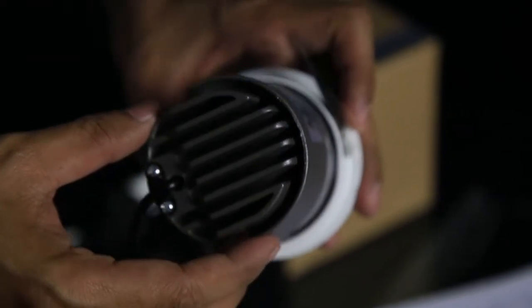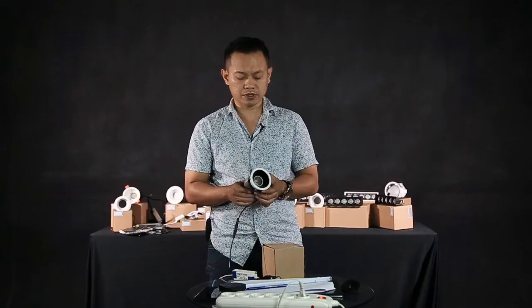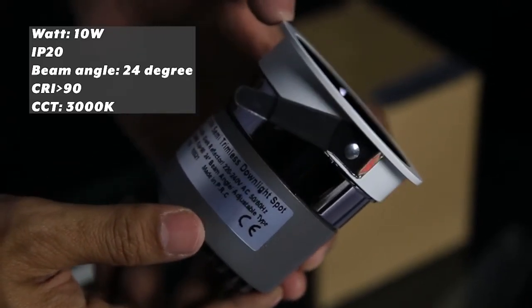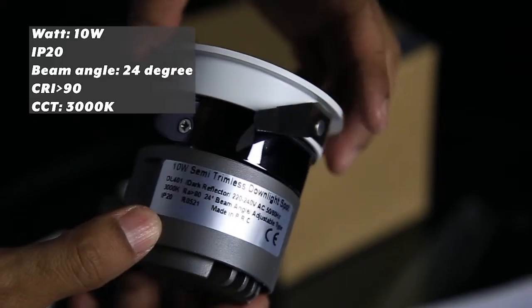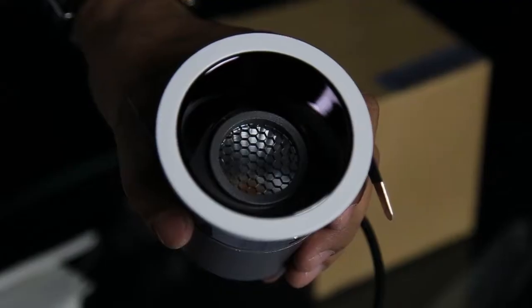For this DL401 we are using 10 watt, 3000K, 24 degree beam angle reflector with IP rating 20. For this downlight we are using CRI 90. Let's have a look.